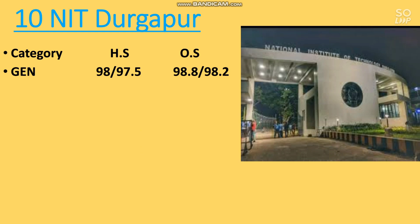For General home state, the cutoff is 98 percentile for male and 97.5 for female. For other state students it is 98.8 for male and 98.2 for female. I will discuss the other state male cutoff; you can check all other cutoffs by pausing the video.